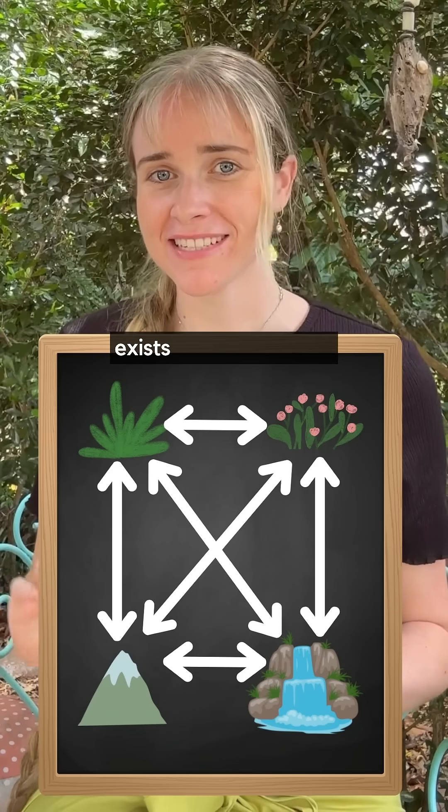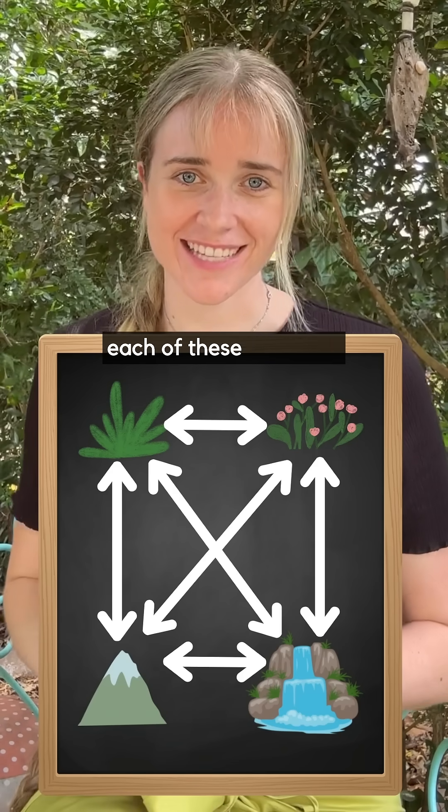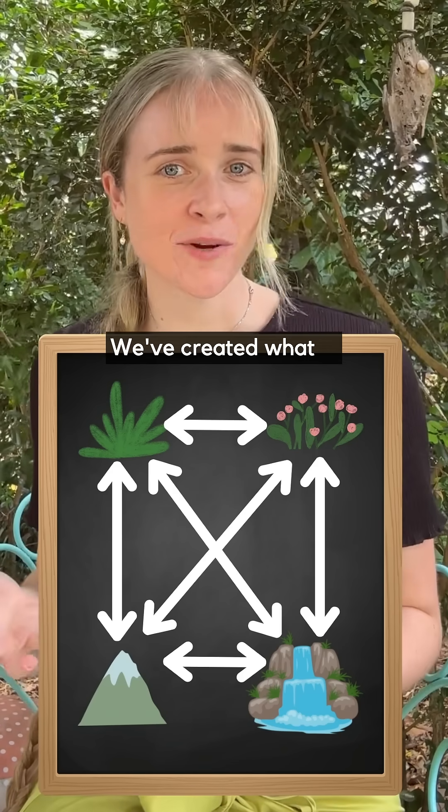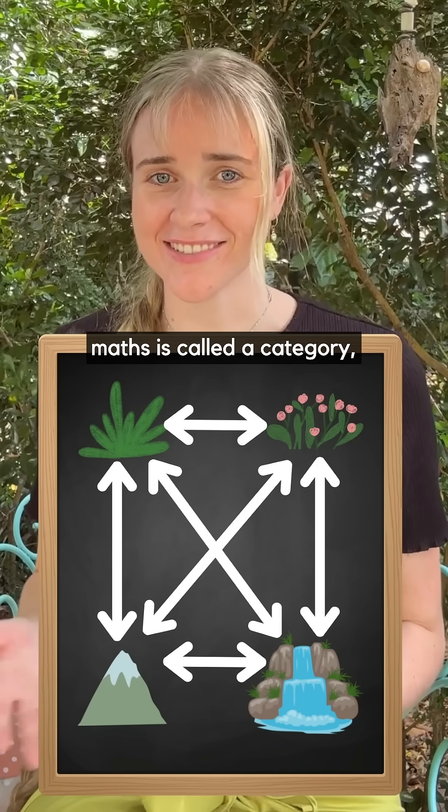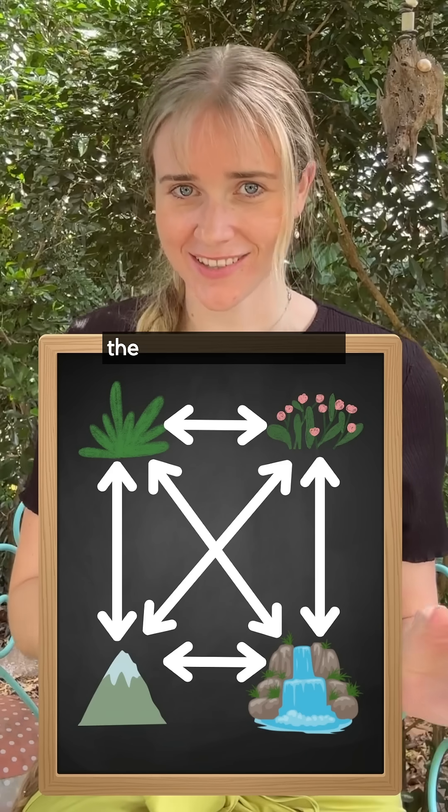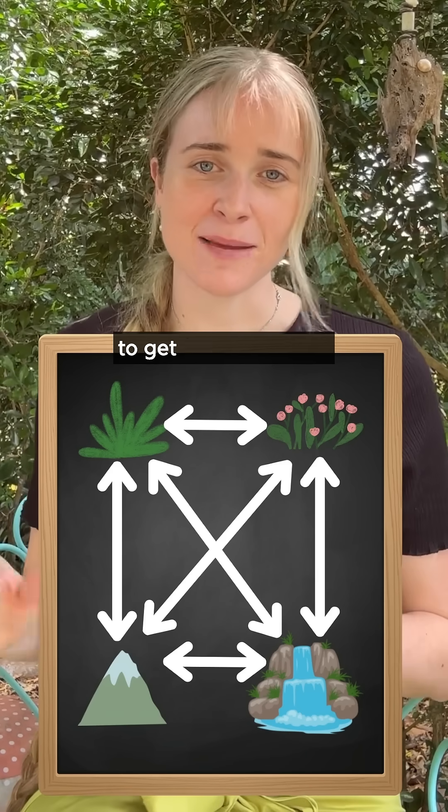We can draw arrows to show that there exists a path between each of these locations. We've created what in maths is called a category since we have objects, the locations, and ways to get between them.